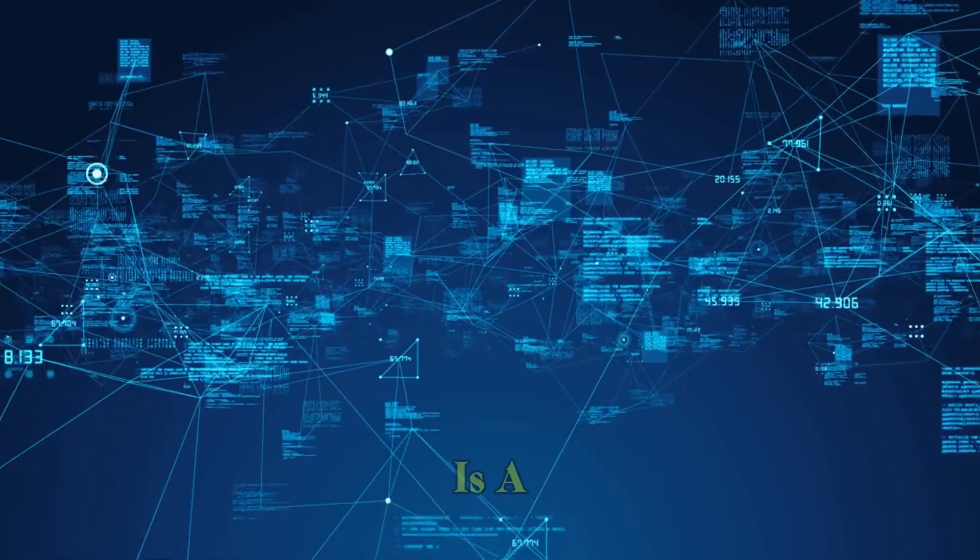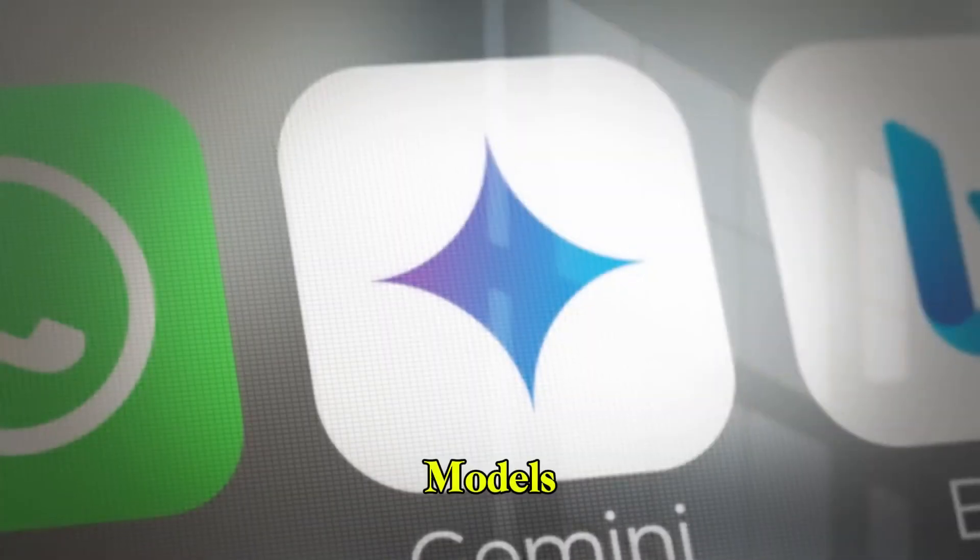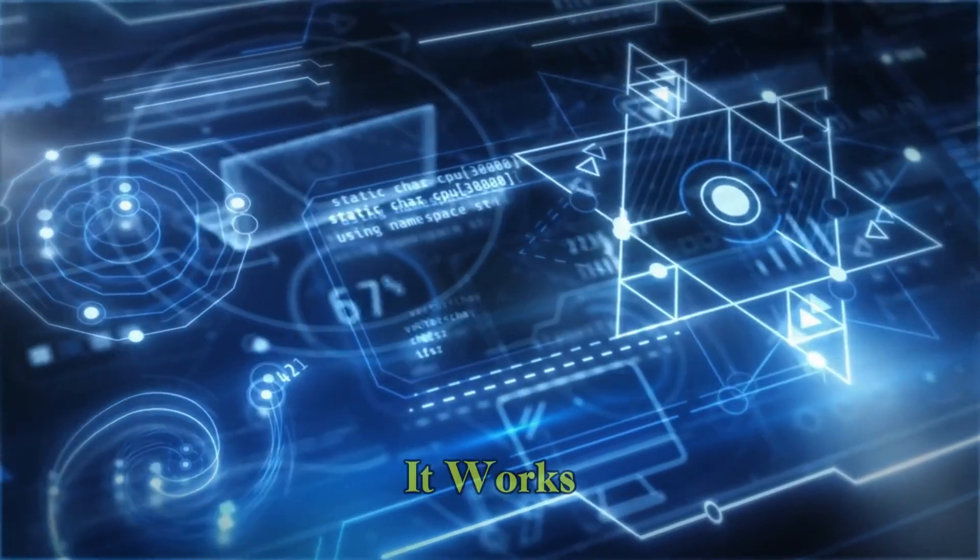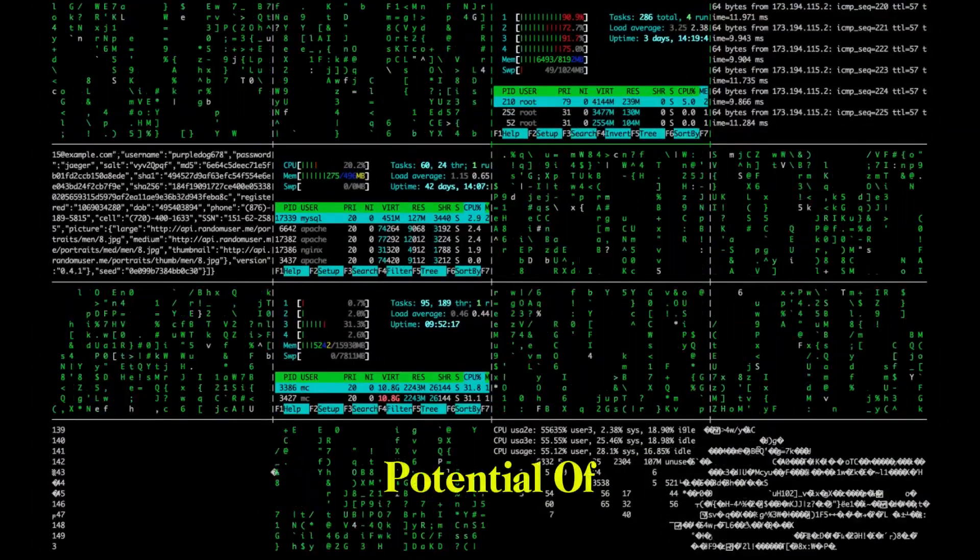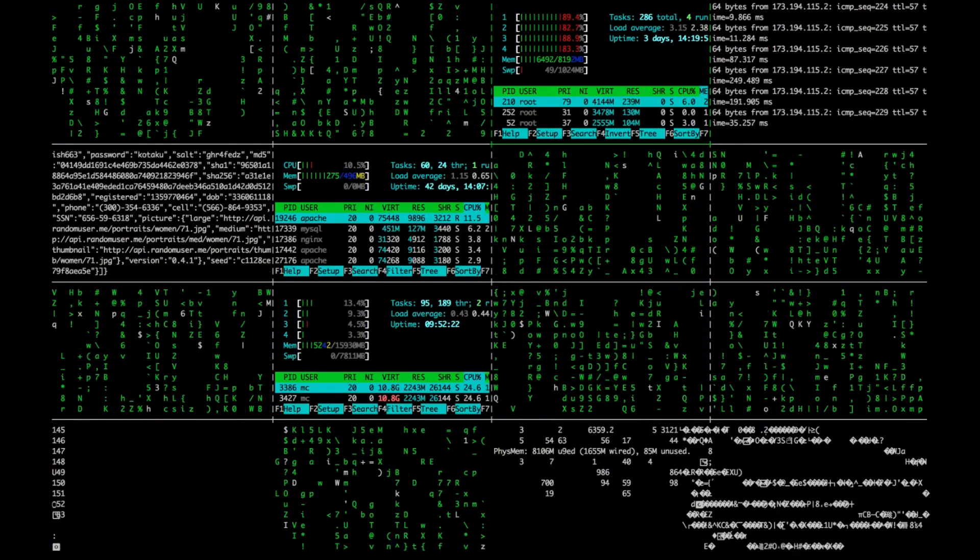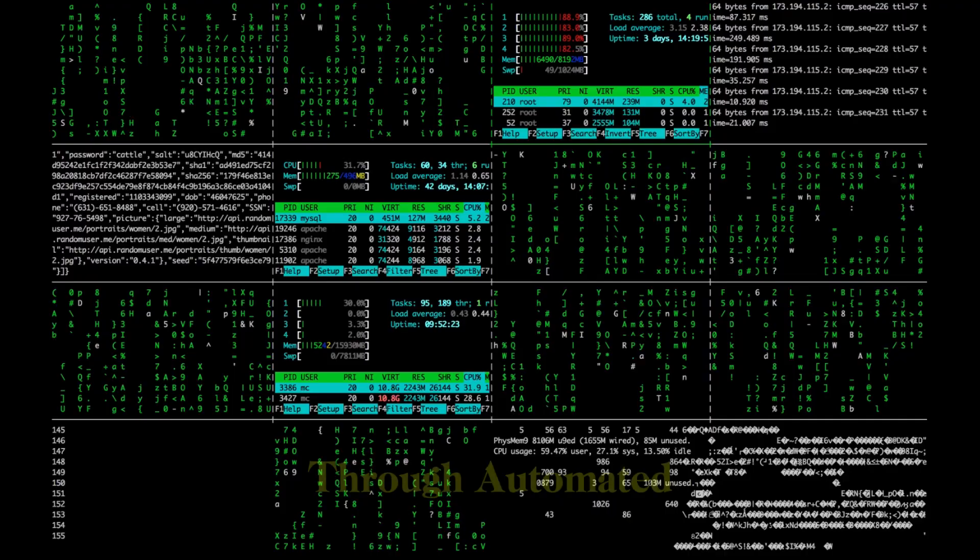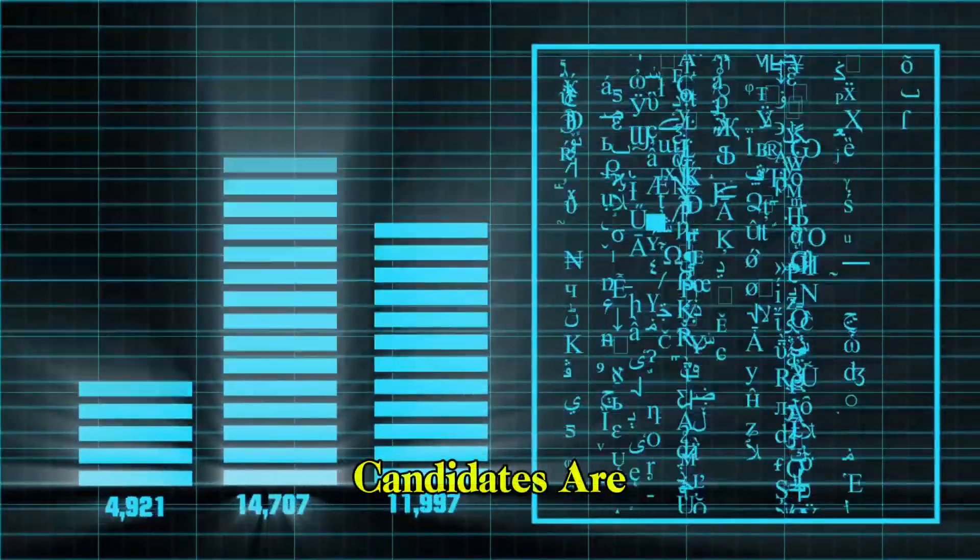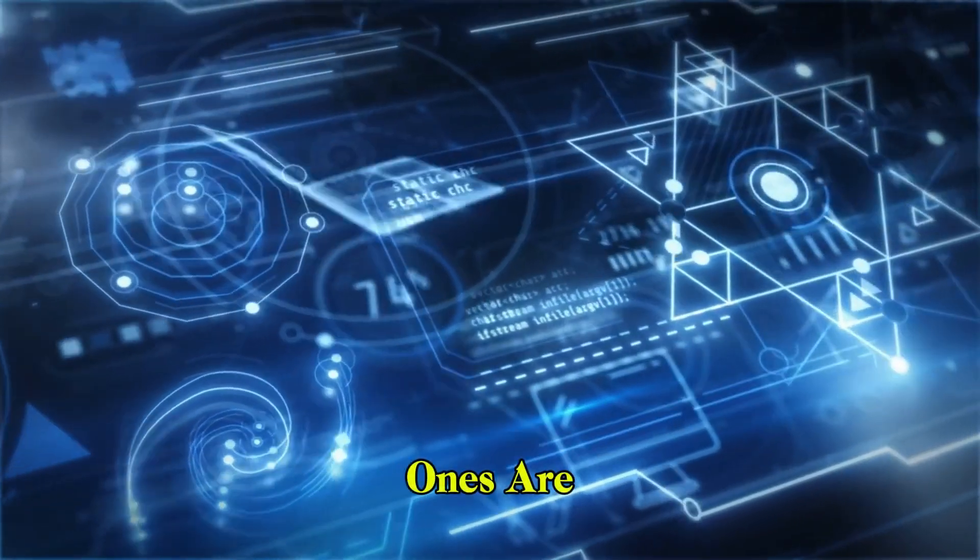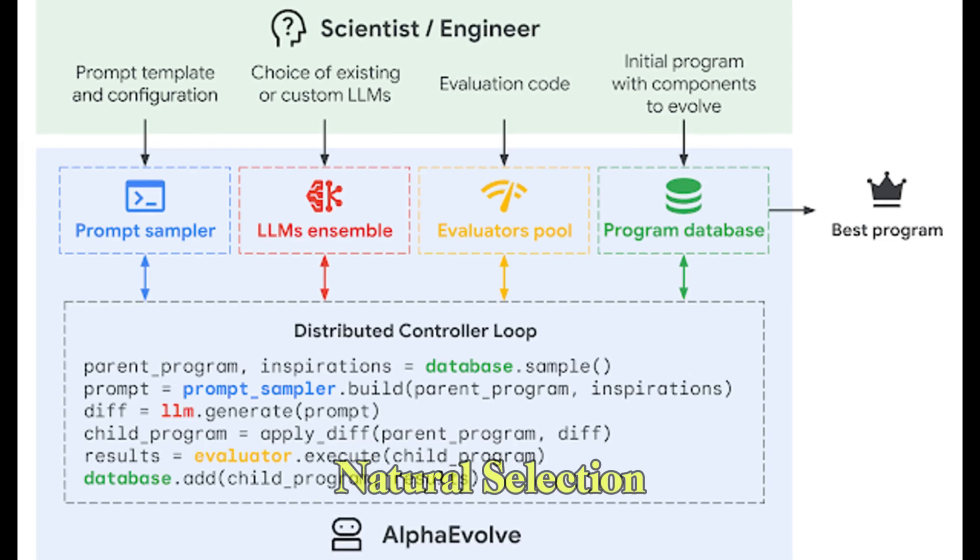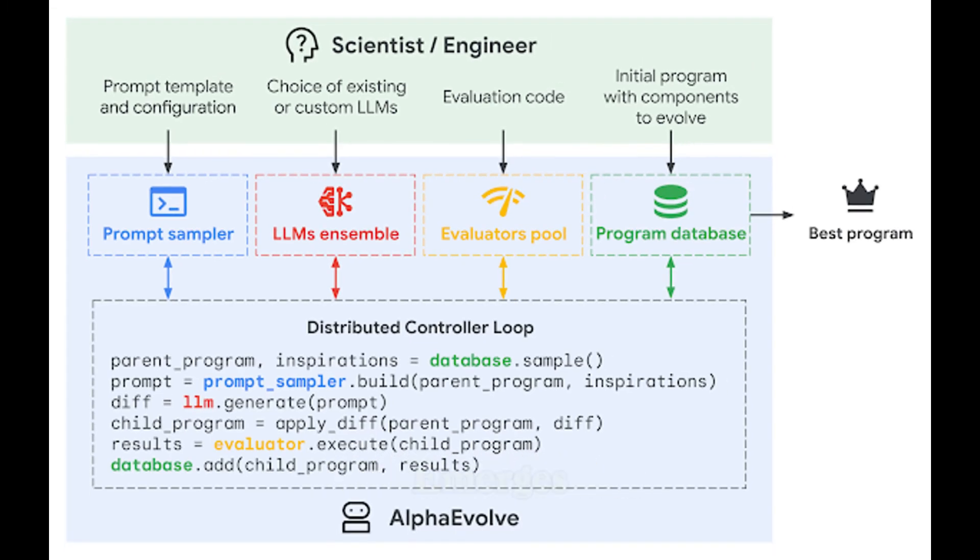AlphaEvolve is a fusion of Gemini's language models and a sophisticated evolutionary engine. Here's how it works. It uses the creative potential of large language models to propose novel algorithmic solutions. These proposals are run through automated evaluators. Poor-performing candidates are discarded, while promising ones are refined. This cycle repeats, mimicking natural selection, until the optimal solution emerges.